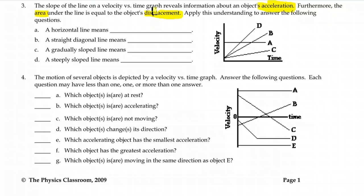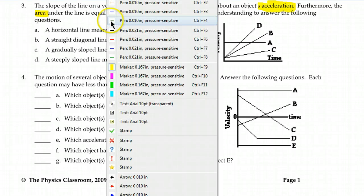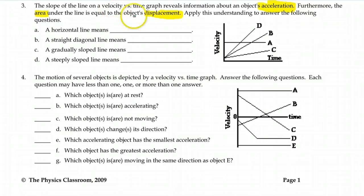The one thing a velocity time graph cannot tell you is where you are currently located. It can just tell you how much you've changed your position. If the line is horizontal, like in A, it means you have constant, the same value, velocity. Because you're reading the velocity right from the graph.